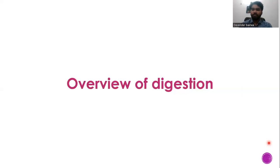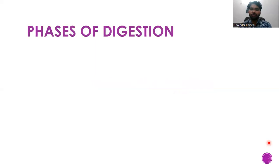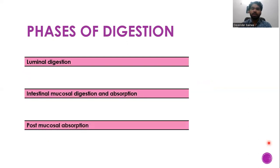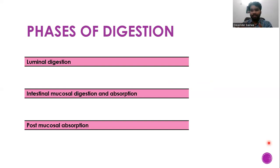Let's start with the overview of digestion. There are three phases of digestion: luminal digestion, intestinal mucosal digestion and absorption, and post-mucosal absorption. In the gut lumen, all the enzymes are mixed with food and digestion begins there. Once food is digested into smaller units — polypeptides, disaccharides, small lipid molecules — these particles settle to the mucosal layer of the gut where mucosal-associated enzymes digest them further. All digested food is then absorbed by the mucosa and enters either the portal vein or the lymphatics, depending on whether it is carbohydrate, fat, or protein.